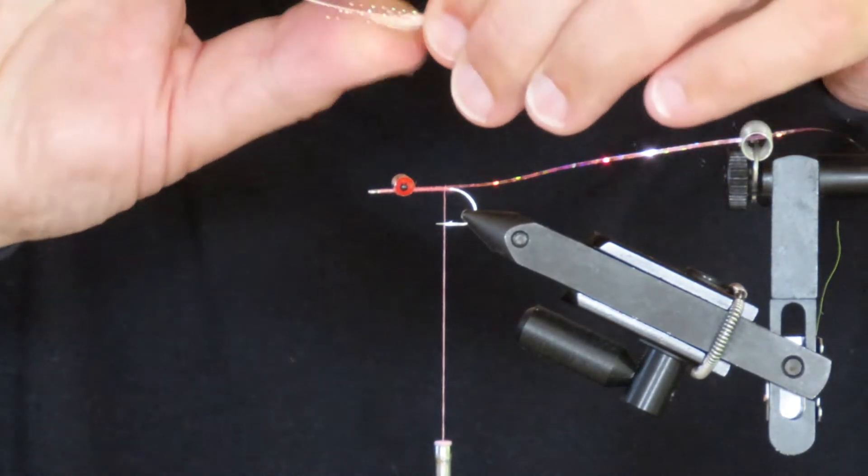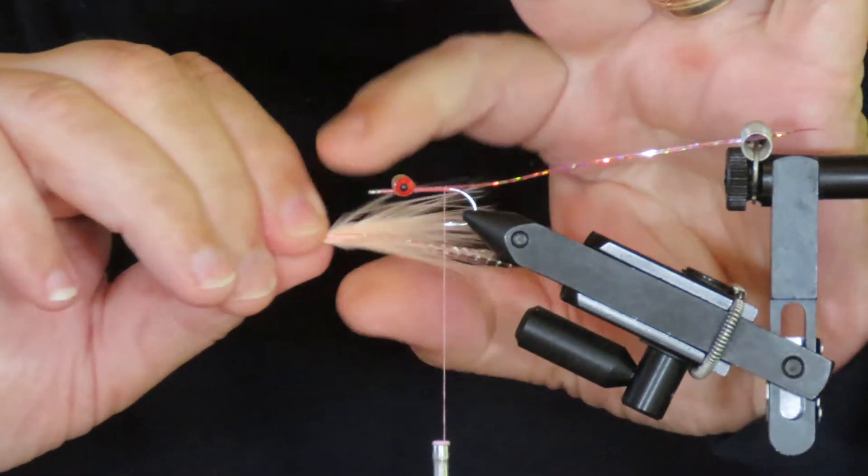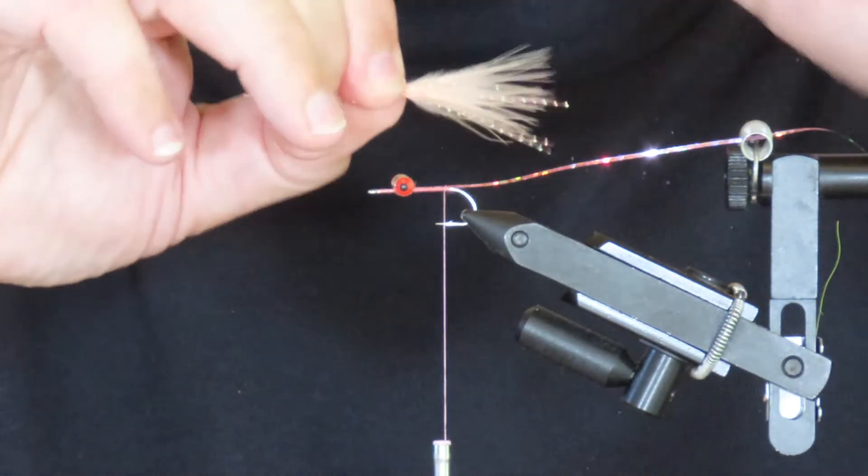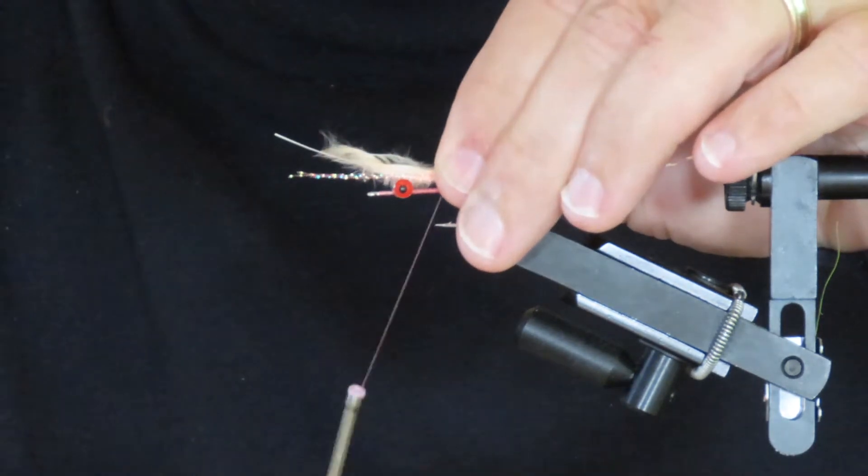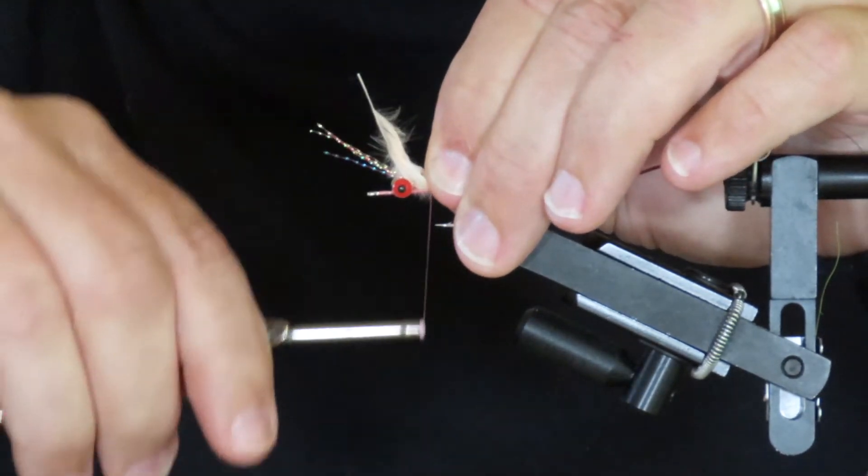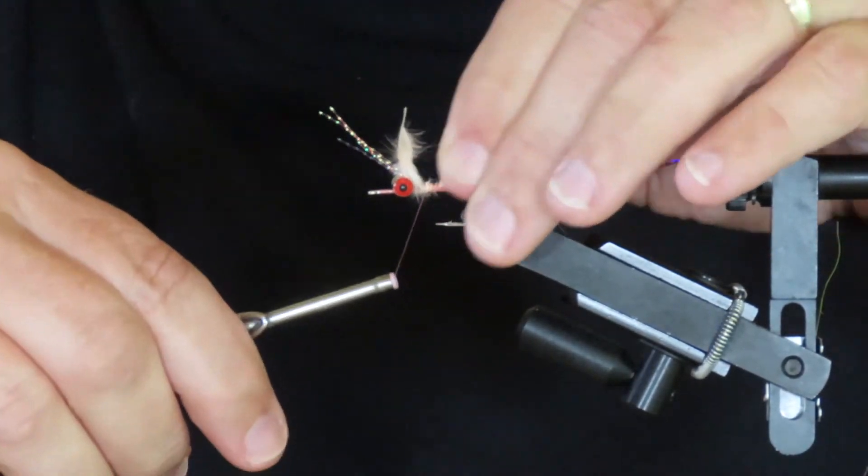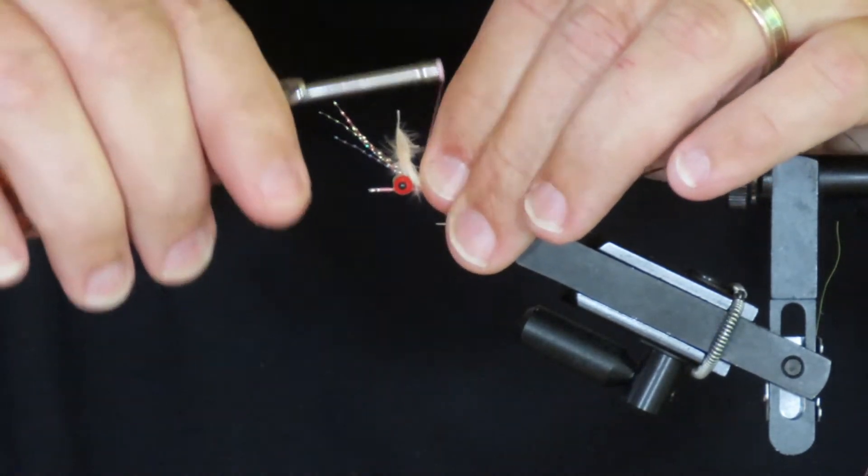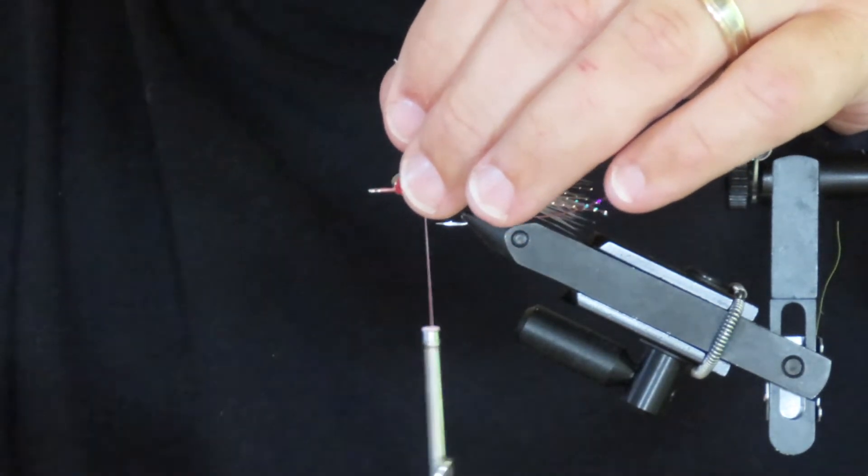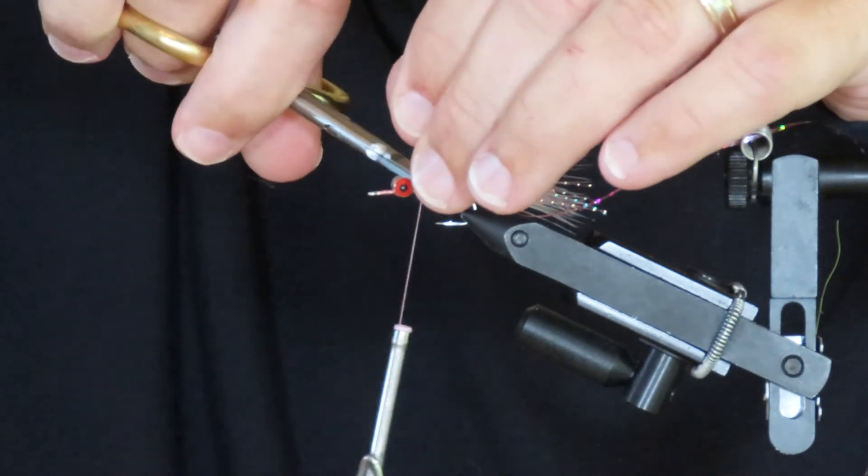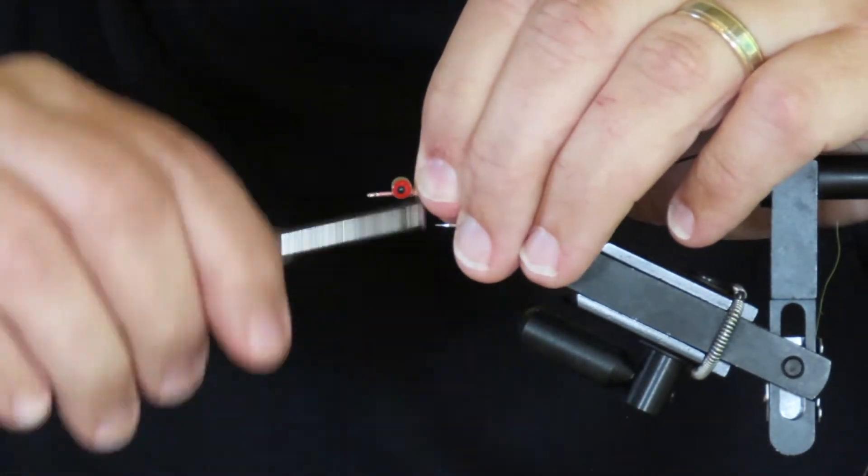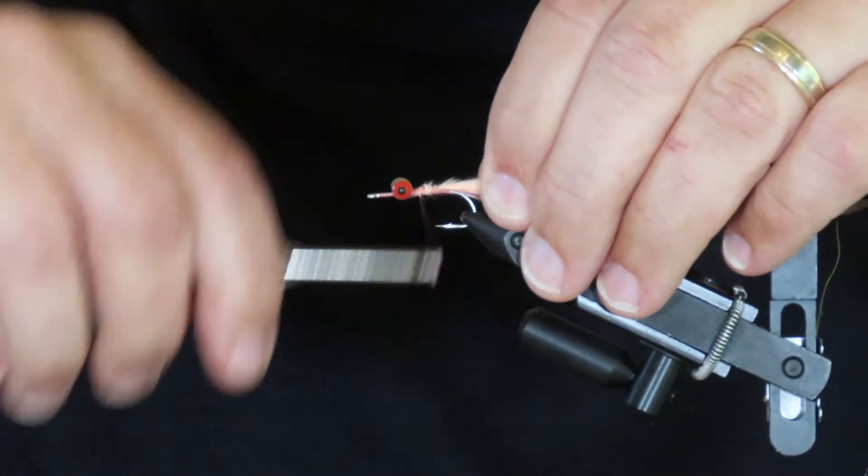I'm going to make it approximately the same length as the shank of the hook—that's about it there. So I'm going to pinch-wrap that tail pretty loosely along the top of the hook shank, taking it up just behind the eyes, and then trim off the excess. Then you can tidy it up as you work your way back down to the tie-in point.